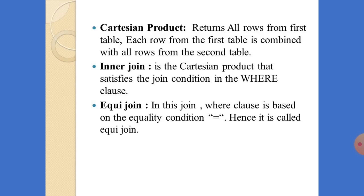Next is the equi join. In an equi join, the WHERE clause is based on the equality condition — we use the equal-to symbol. For example: WHERE job = 'manager' or WHERE salary = 3000. Based on the criteria, it will retrieve the rows. If you give an equality symbol in the WHERE clause, then it is called an equi join.